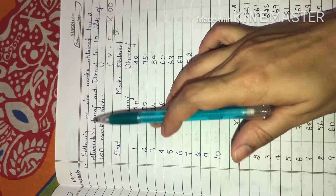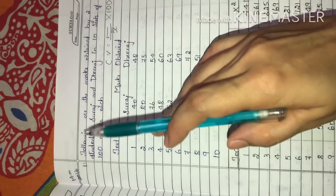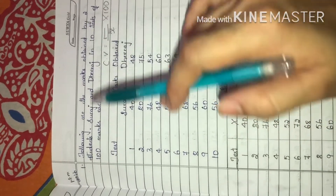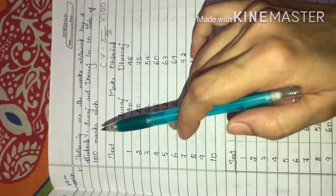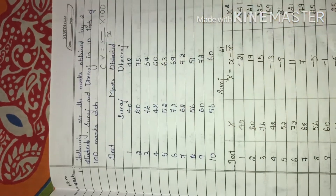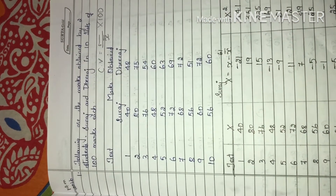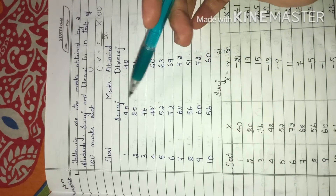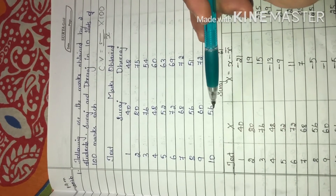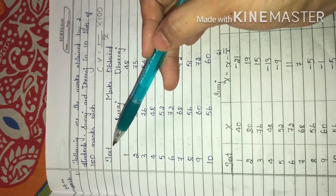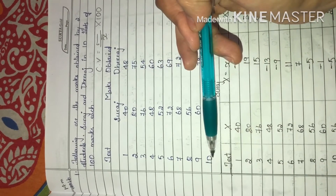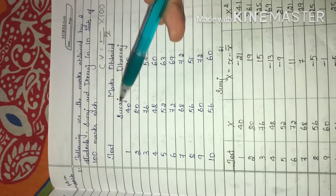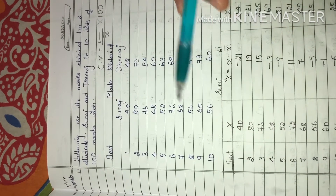I will read the question. Following are the marks obtained by two students, Suraj and Dheeraj, in 10 tests of 100 marks each. They have attended 10 tests and the data shows marks out of 100 in each subject, from tests 1 to 10. The number series represents the tests, and these are the marks obtained by Suraj.